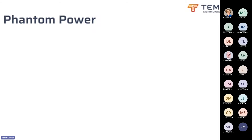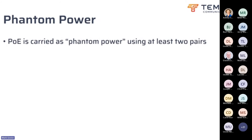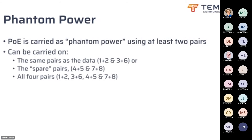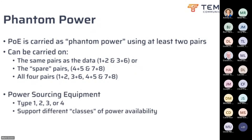You're also going to hear about things called alternative A, mode A, alternative B, mode B, classes 1 to 8 which define the power capability, and the types of power sources, types 1 to 4, which can support different numbers of classes. We have the phantom power on two pairs, using all the pairs in the cable. They might be on the same pairs — pairs 1 and 2, normally 3 and 6, which are the common data pairs — it might be on the spare pairs, or on all four pairs. There are different types of equipment powering the cable, supporting different classes of power capability.